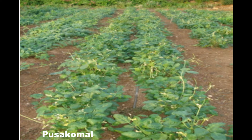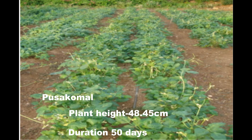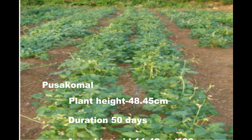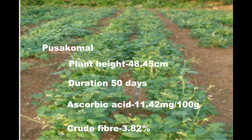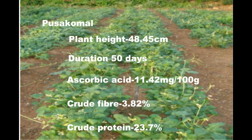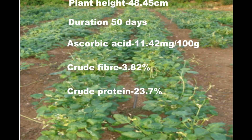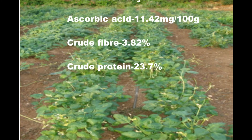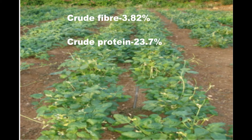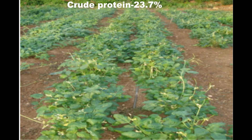Pusa Komal has a plant height of 48.45 cm and a duration of 50 days. Ascorbic acid content is 11.42 mg per 100g, crude fiber is 3.82%, and crude protein is 23.7%.